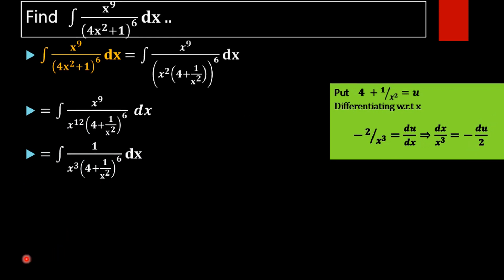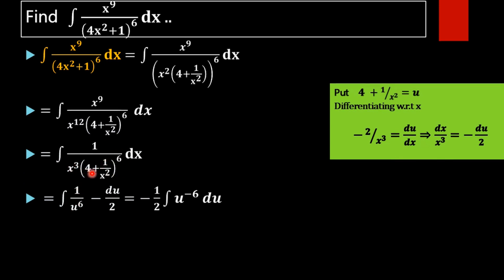On giving the substitutions, we will get 1 by u raised to 6 — since 4 plus 1 by x squared equals u — multiplied by dx by x cubed, which can be rewritten as minus du by 2. In the next step, taking minus 1 by 2 outside, what remains is u raised to minus 6, since 1 by u raised to 6 is rewritten as u raised to minus 6 du.